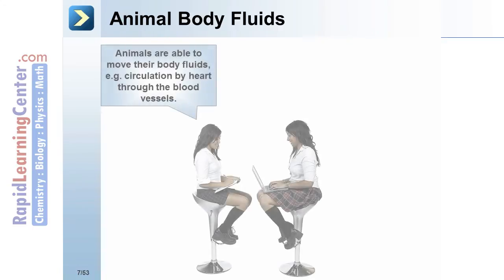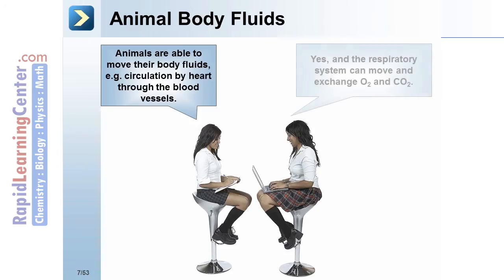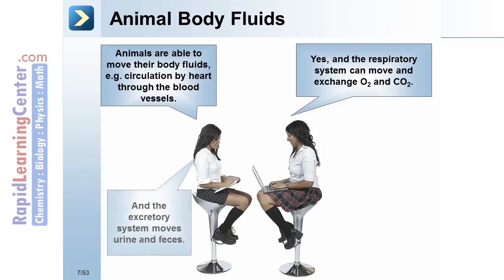Animal body fluids. Animals are able to move their body fluids — for instance, circulation — by the heart through blood vessels. The respiratory system can move and exchange O2 and CO2, and the excretory system moves urine and feces.